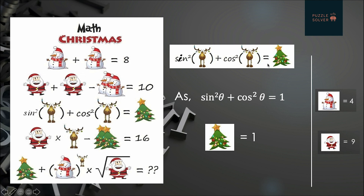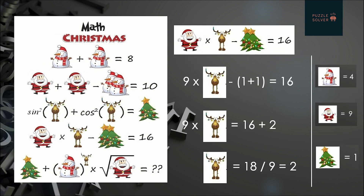In the third equation we have sine squared of reindeer plus cosine squared of reindeer is equal to Christmas tree. We know the formula in maths that sine squared theta plus cosine squared theta equals one. Considering theta equal to reindeer, sine² reindeer + cos² reindeer = 1. So the value of Christmas tree is equal to one.